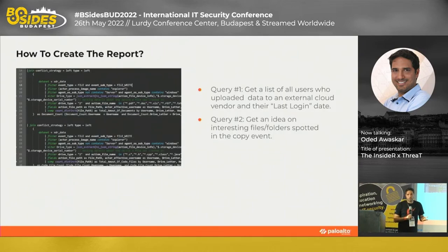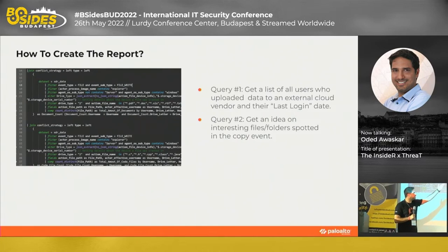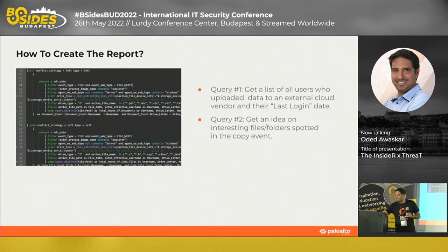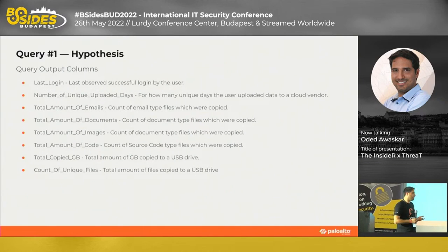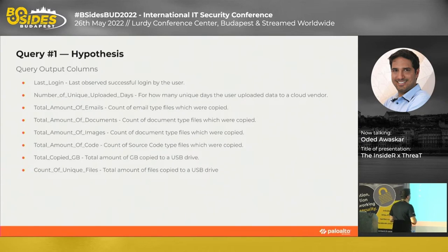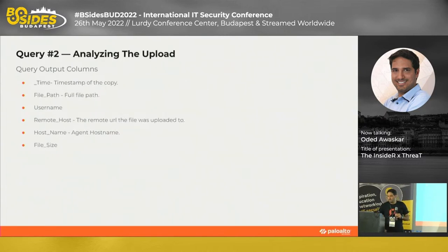How to create the report for Use Case 2: again we use two queries, very similar to the first approach — getting a list of all users who uploaded data to third-party vendors whose last login was set back in the past. The output columns include: last login date, number of unique upload days, total amount of emails, documents, images, code, total gigabytes, and unique files spotted. Query number two helps us analyze what specific files were being uploaded.